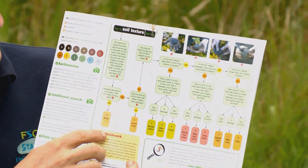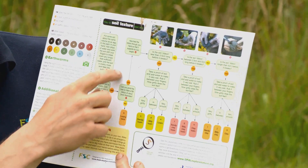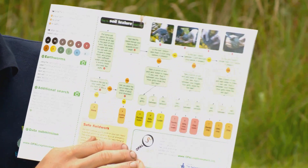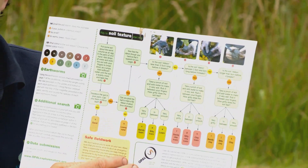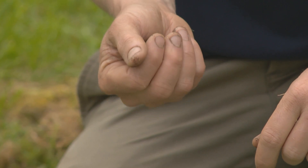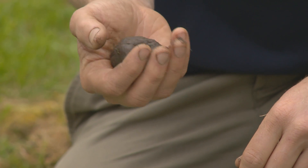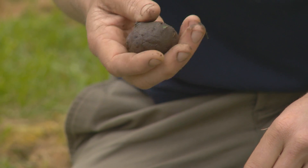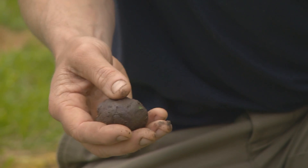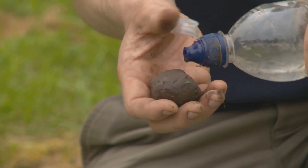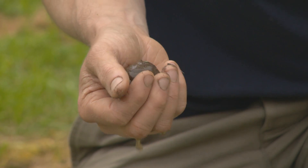We're going to start here and the questions are going to guide us through the process, and at the end we're going to find out what kind of soil texture we have. I've just selected a soil sample from about 10 centimetres depth, and you're going to want about enough to form an egg-sized shape in your palm. To make the soil easier to work with for this test, it sometimes helps if you add a little bit of water to make it slightly more malleable.